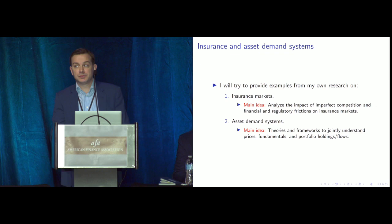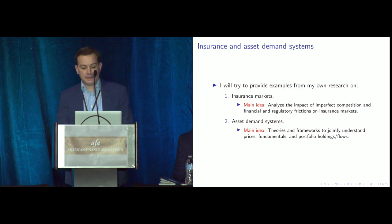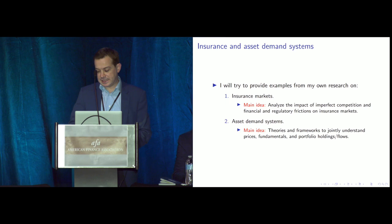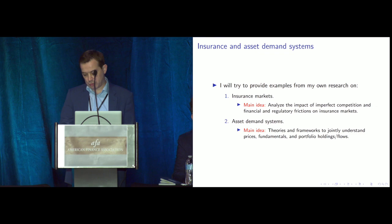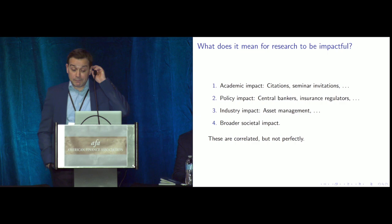That led to a second agenda on asset demand systems. In all our asset pricing models we write down a model of demand to impose market clearing and determine pricing. But empirically we tend to focus on prices and fundamentals and don't use holdings and flows very much. The whole idea behind demand system asset pricing is to incorporate data on holdings and flows and develop theories and frameworks to understand all that data together.